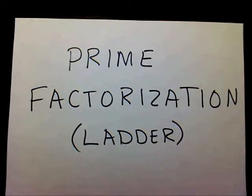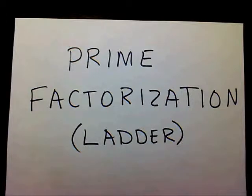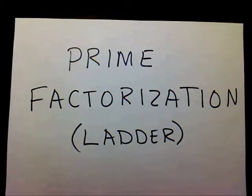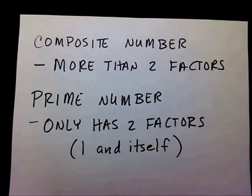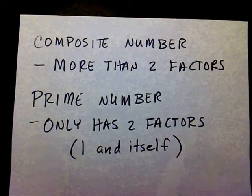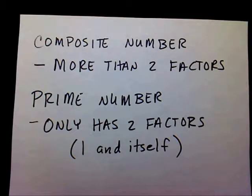Today we're going to find the prime factorization using another method. I call this the ladder method. In order to use the ladder method, you need to know your prime numbers. In the video from before, we said that a prime number has two factors — one and itself — and composite numbers have more than two factors. That's a review from the last time.